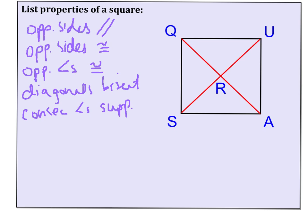And from a rectangle we know that the four angles have to be right angles and the diagonals are congruent.